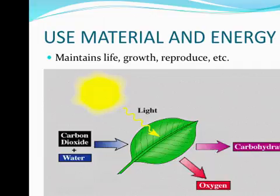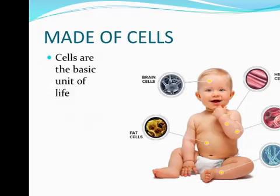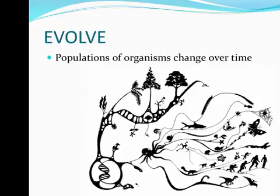Organisms use material and energy to maintain their life, to grow, to reproduce, etc. Some organisms make their own food and energy, while other organisms have to take in food and energy from their environment. All organisms are made of at least one cell — the cell is considered the basic unit of life. And lastly, organisms evolve. Individual organisms do not evolve, but groups of organisms called populations that are the same species change over time.